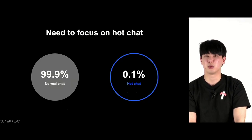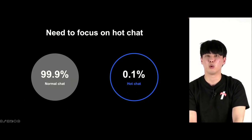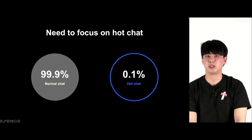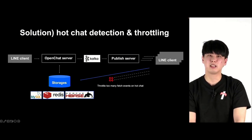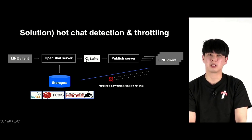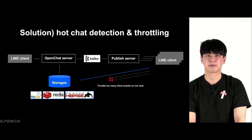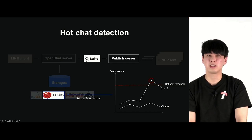Hot chats are less than 0.1% of all chats, and we cannot add shards or increase replications because it would create significant overhead. So the open chat server team focused on identifying a way to target only the hot chats. If we can identify hot chats in real time and reduce the fetch event API requests, we can reduce the load on the shard due to hot chat. This approach is called hot chat detection and throttling.